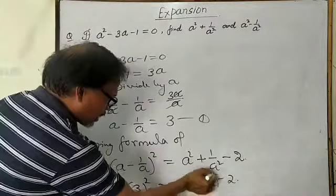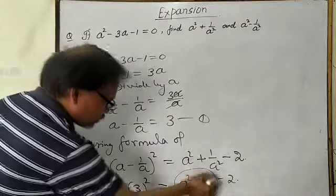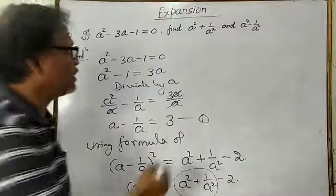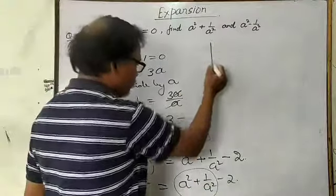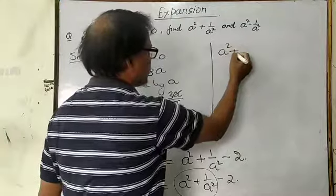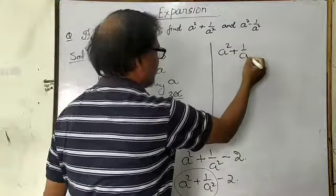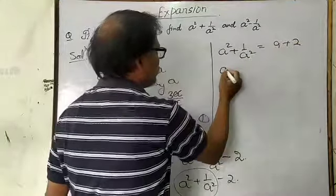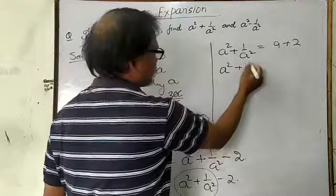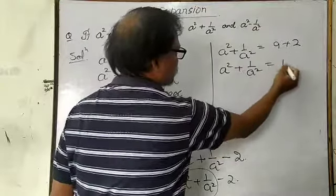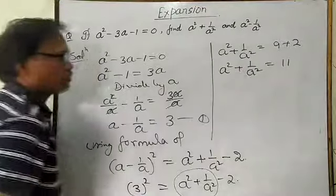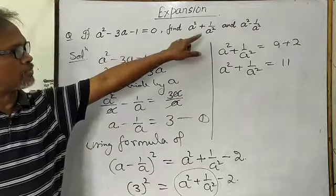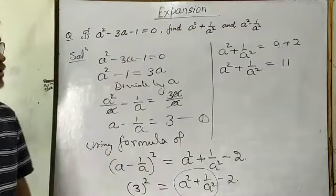Then this part you have to find — take minus 2 to the other side. So a squared plus 1 upon a squared is equal to 9 plus 2, which means a squared plus 1 upon a squared is equal to 11. This is the value of a squared plus 1 upon a squared.